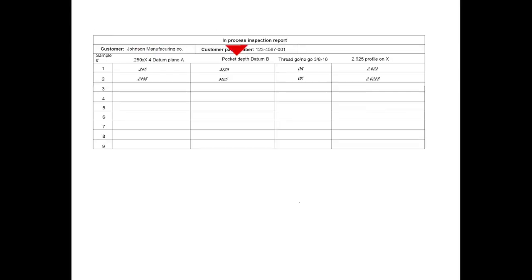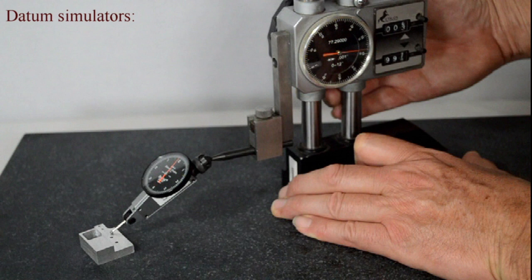Match them up to the IIR and record your findings. When you get your package together make sure you've got your datum simulators, which are your go, no-go gauges, thread gauges.